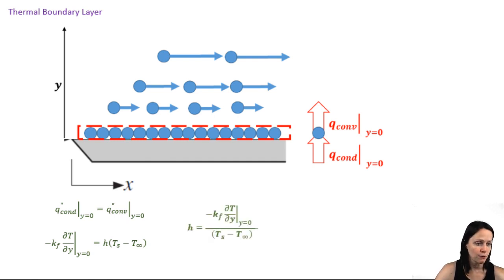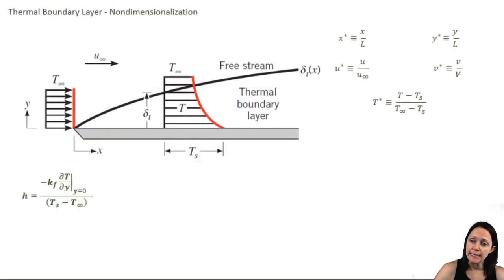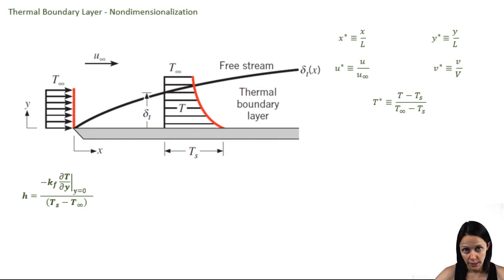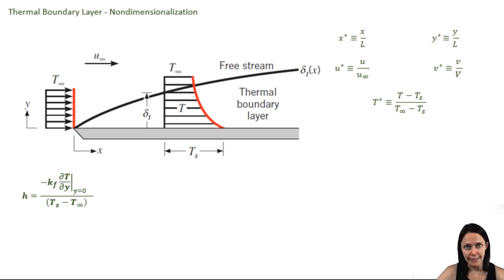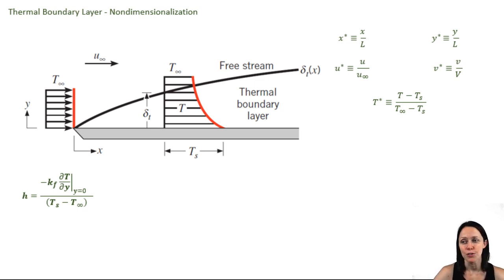Now we solve for our heat transfer coefficient. What we do next is non-dimensionalize our problem. Instead of talking about the temperature at some location y, we define T-star. Instead of talking about locations x and y, we normalize them to the length. The same thing with the velocities: U-star is defined as the velocity normalized to the free stream velocity in the x-direction, and V-star is the velocity in the y-direction normalized to the free stream velocity.